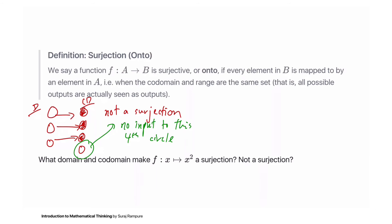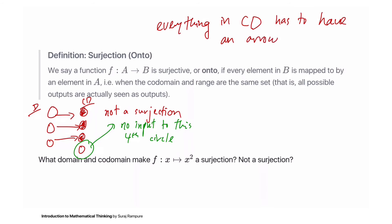For a function to be onto or a surjection, everything in the codomain has to have an arrow pointing to it.